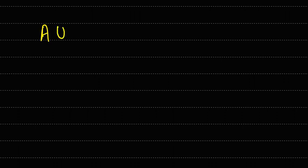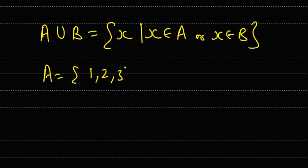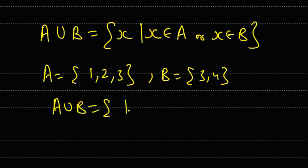Now we will discuss some operations on sets. Suppose A and B are two sets. The symbol for union is A ∪ B, and it is defined as the set of elements x such that x belongs to A or x belongs to B. So A ∪ B contains all elements that belong to either A or B. For example, if A = {1, 2, 3} and B = {3, 4}, then A ∪ B = {1, 2, 3, 4}.